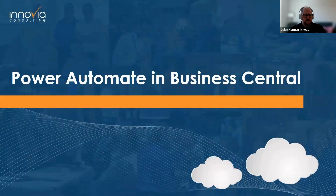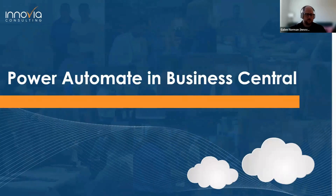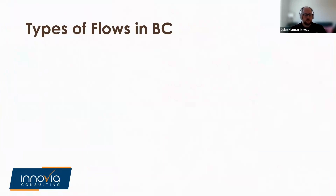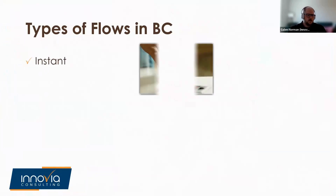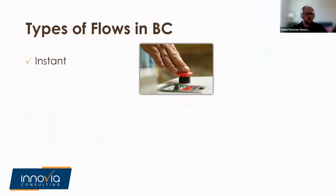Now that you have an understanding of Power Automate and its role in the Power Platform, let's dive into the main topic: Power Automate and Business Central. There are three types of Power Automate flows available in Business Central: instant, scheduled, and automated.